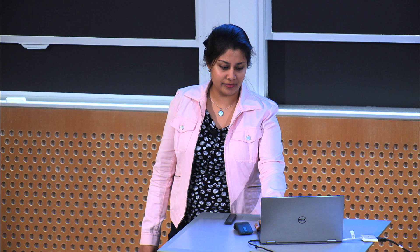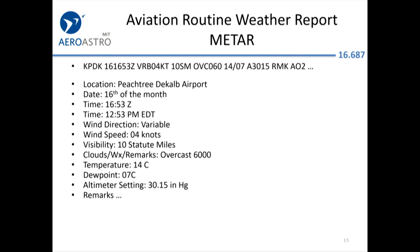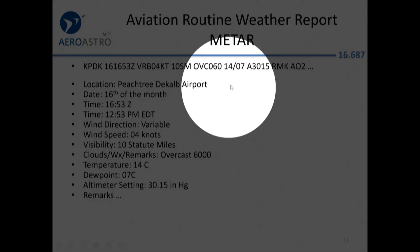Here's an example METAR report. It starts with the location. The first two numbers — 16 — tell you it's the 16th day of the month, followed by 1653Z for the time in Zulu. We already talked about subtracting hours depending on Eastern Standard versus Daylight Time. Instead of a wind heading, in this case it has variable winds at about four knots. The next is visibility: 10SM stands for 10 statute miles. The ceiling is overcast at 6,000 feet.